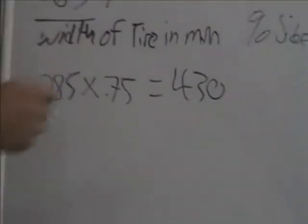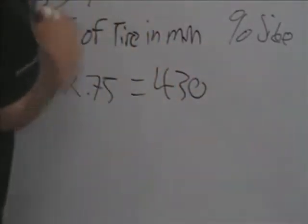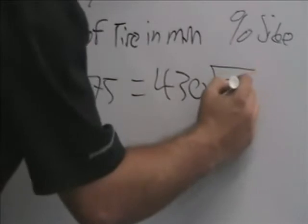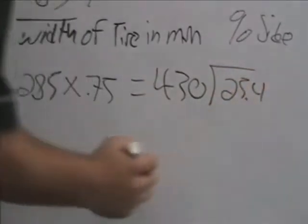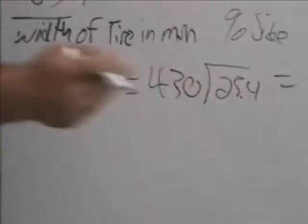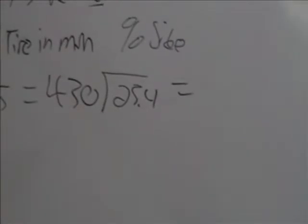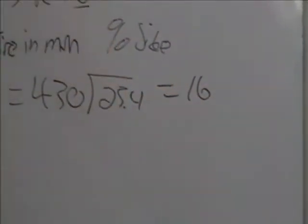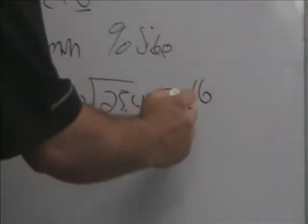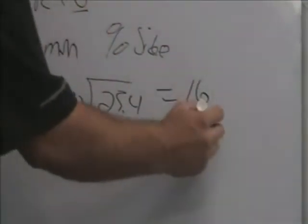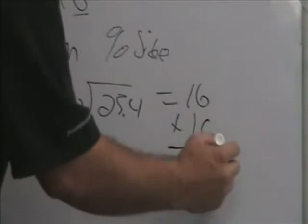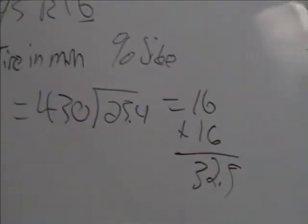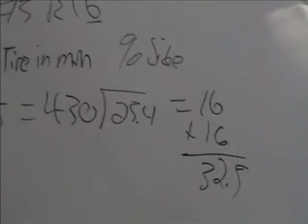Then, when you get that answer right here, when you get this number, then you're going to divide it by 25.4 and that will equal a number, probably around 16. And then what you do is you add the wheel size, which is 16. And that will basically give you 32. Now this actually comes out, this tire is 32 and a half inch tall tire. But that's basically how you measure that. And that will work with any tire.